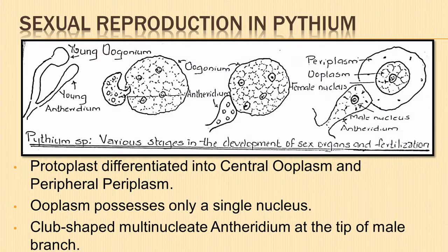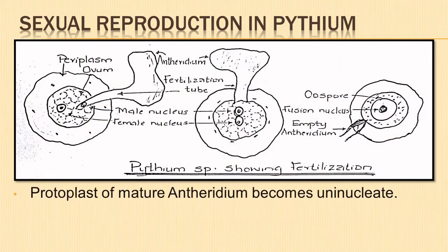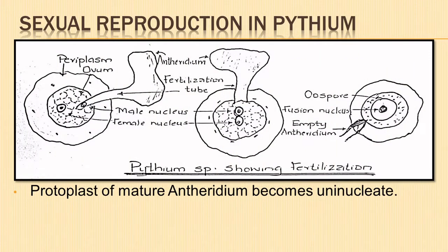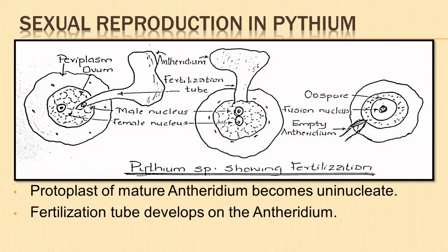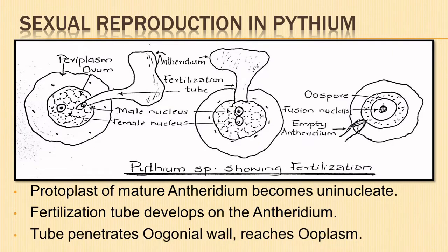The antheridium is a club-shaped, multinucleate cell formed at the tip of the male branch arising from the stalk of the oogonium. The inflated portion at the tip is the antheridium. The protoplast of the mature antheridium becomes uninucleate. Fertilization is brought about by means of a fertilization tube developed on the antheridium, which penetrates the oogonial wall.